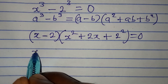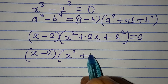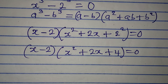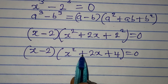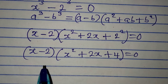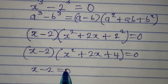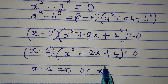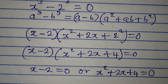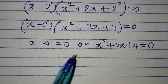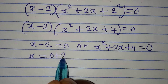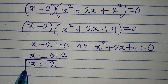Simplifying, we have (x minus 2)(x squared plus 2x plus 4) equals 0. By the zero product rule, either factor can equal zero. From x minus 2 equals 0, we get x equals 2. This is one of the solutions to the equation.